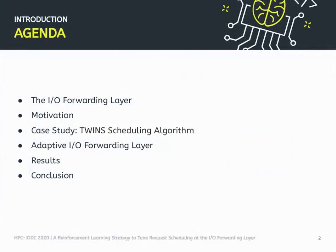Here is a quick agenda of the presentation. I will first go through some basic concepts on the IO forwarding layer, then present our motivation, our case study, which is a scheduling algorithm where we want to tune one of the parameters, our approach to make this sort of adaptation in the forwarding layer, our results, and conclusions.